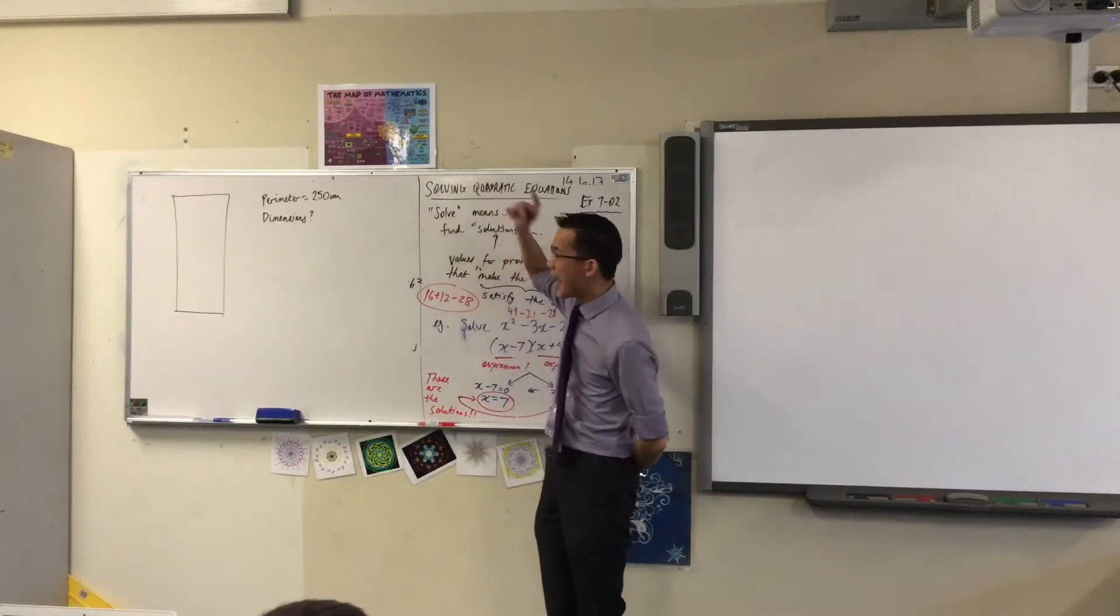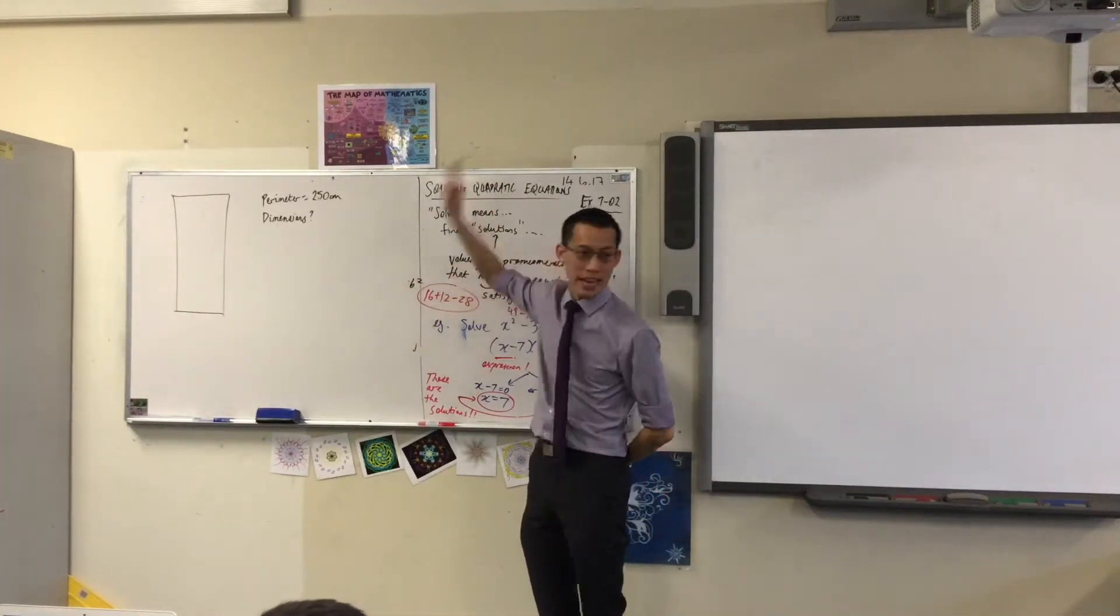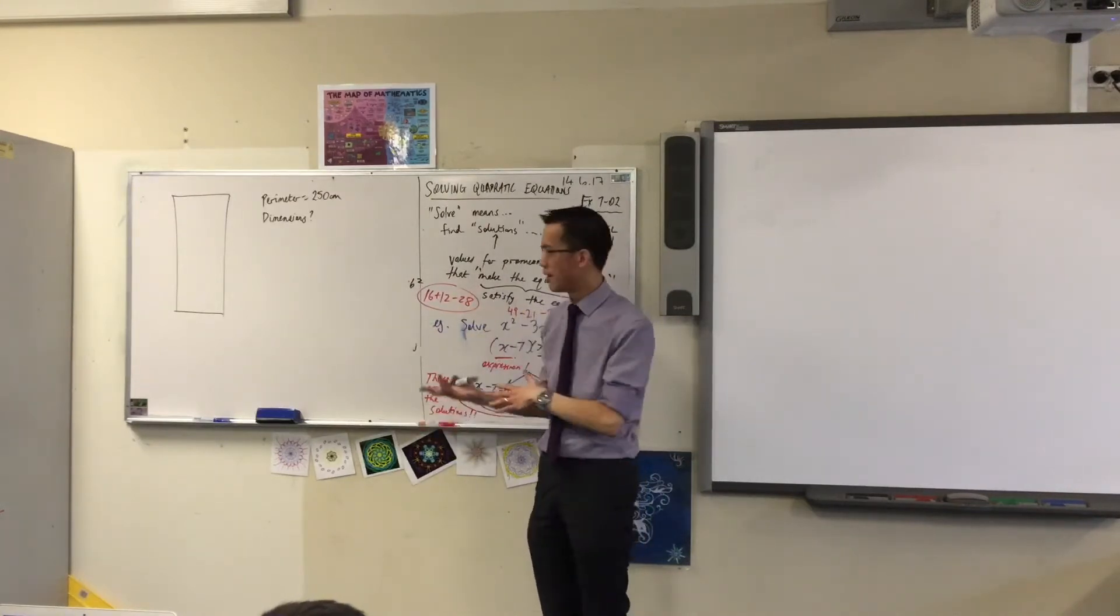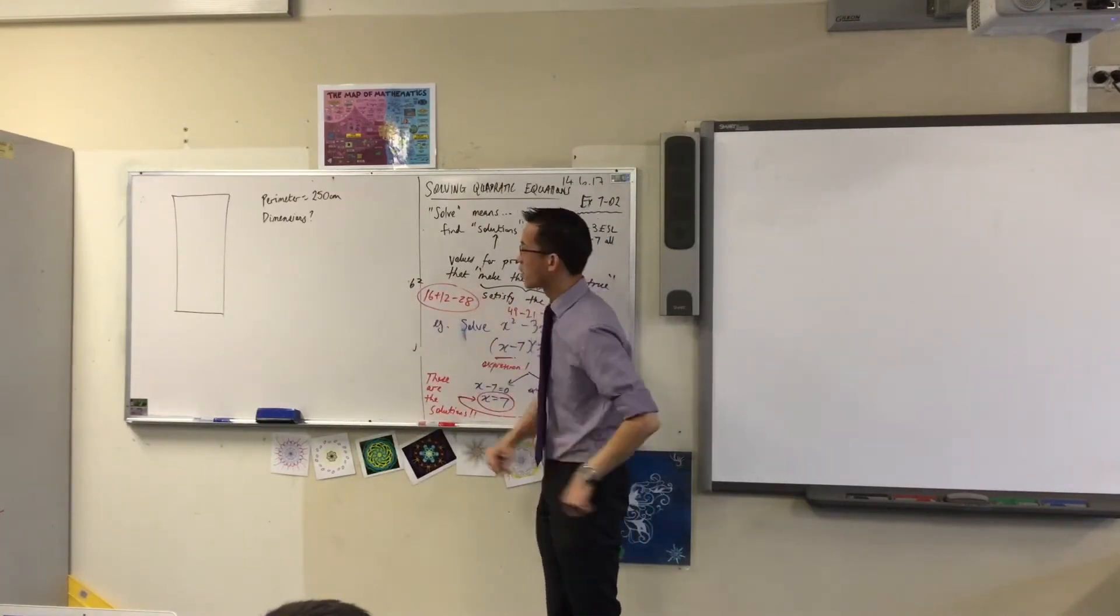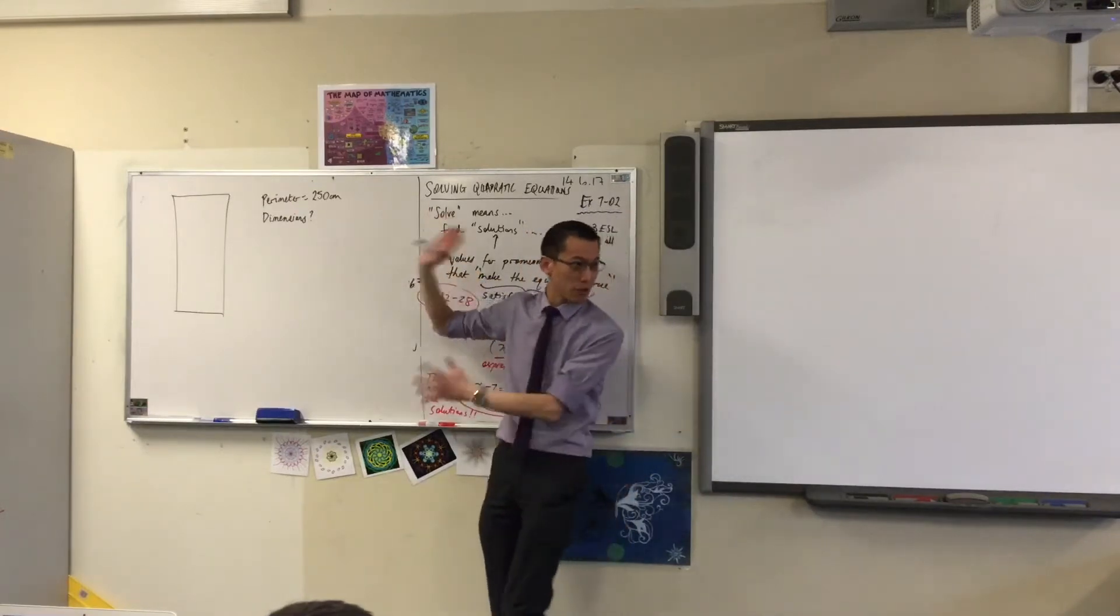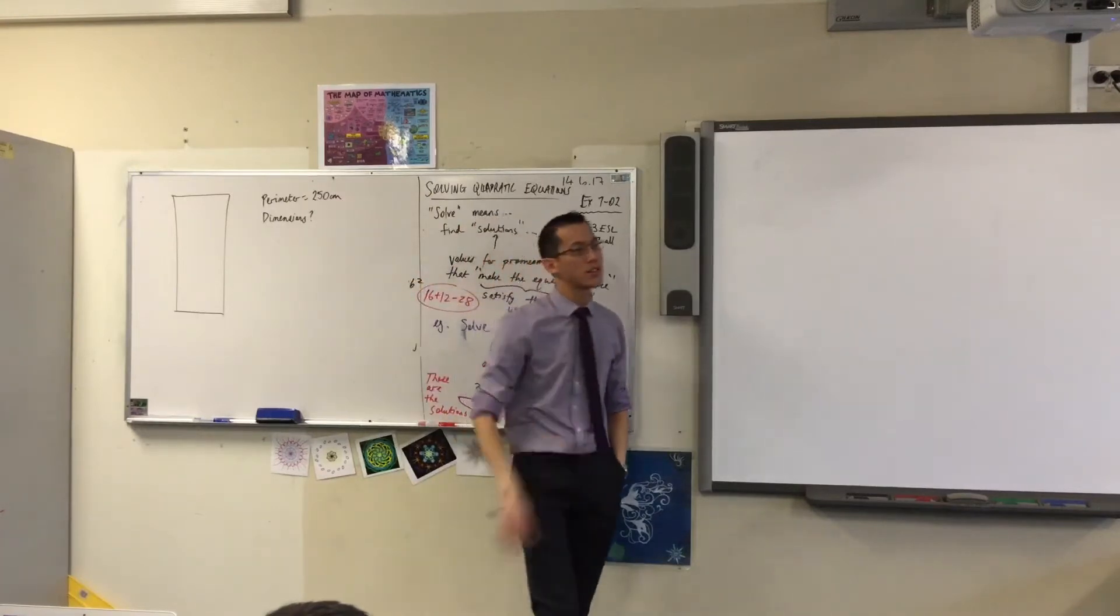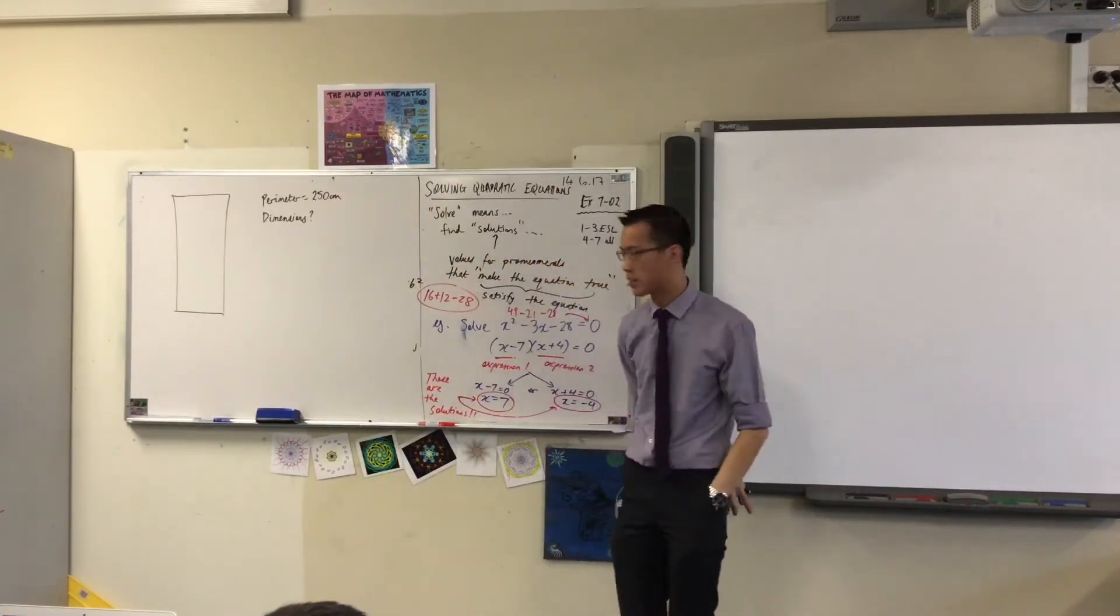They say there's a rectangle and the length of the rectangle is four times the width. It's four times as long as it is wide. So they give you that relationship, they tell you the perimeter is that, and then what they ask for is the dimensions.